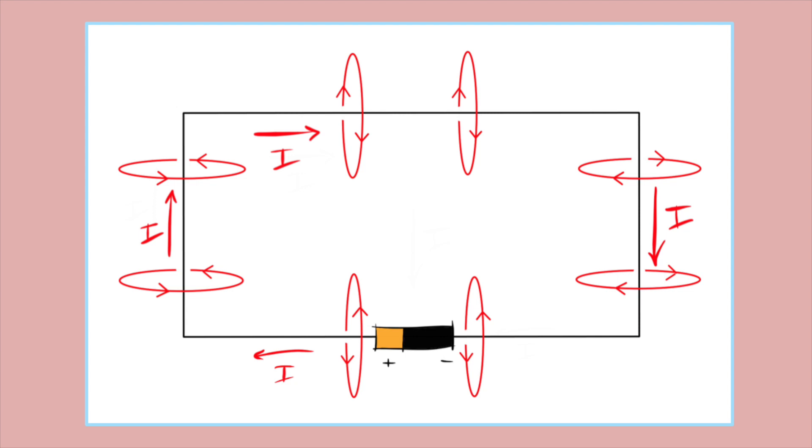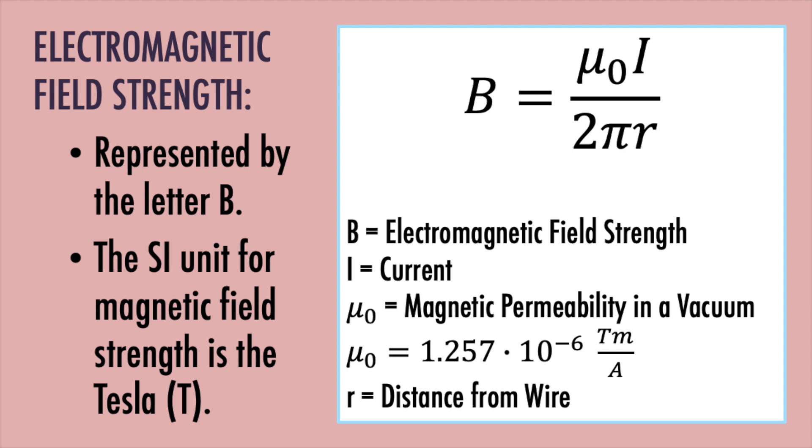Let's start with strength. The strength of any magnetic field is typically represented by a capital B. So it doesn't matter if it's a permanent magnet creating the field or electricity creating the field, it will always be represented by a capital B. In the same way, the standard unit for magnetic field strength is the Tesla, named after the physicist, not the car company.